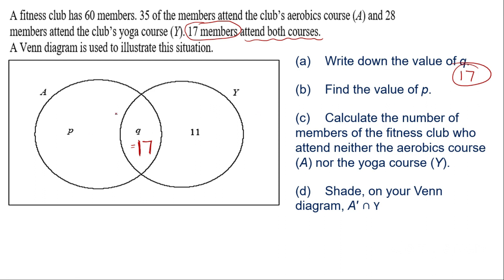Find the value of P. Now to get P you have the total of all the members that go for the aerobic course which is 35. So from this data we should realize that it is P plus Q giving you a total of 35. So for sure P is going to be equal to 35 minus Q which is 35 minus 17 giving you 18. So P is 18.